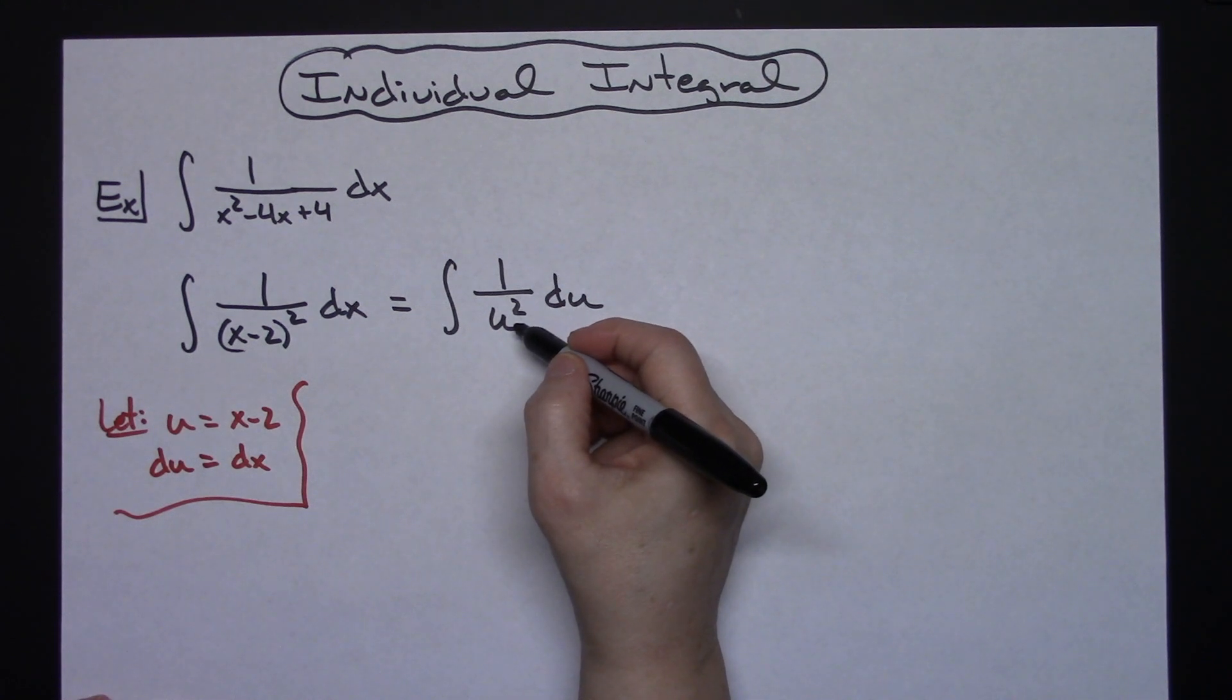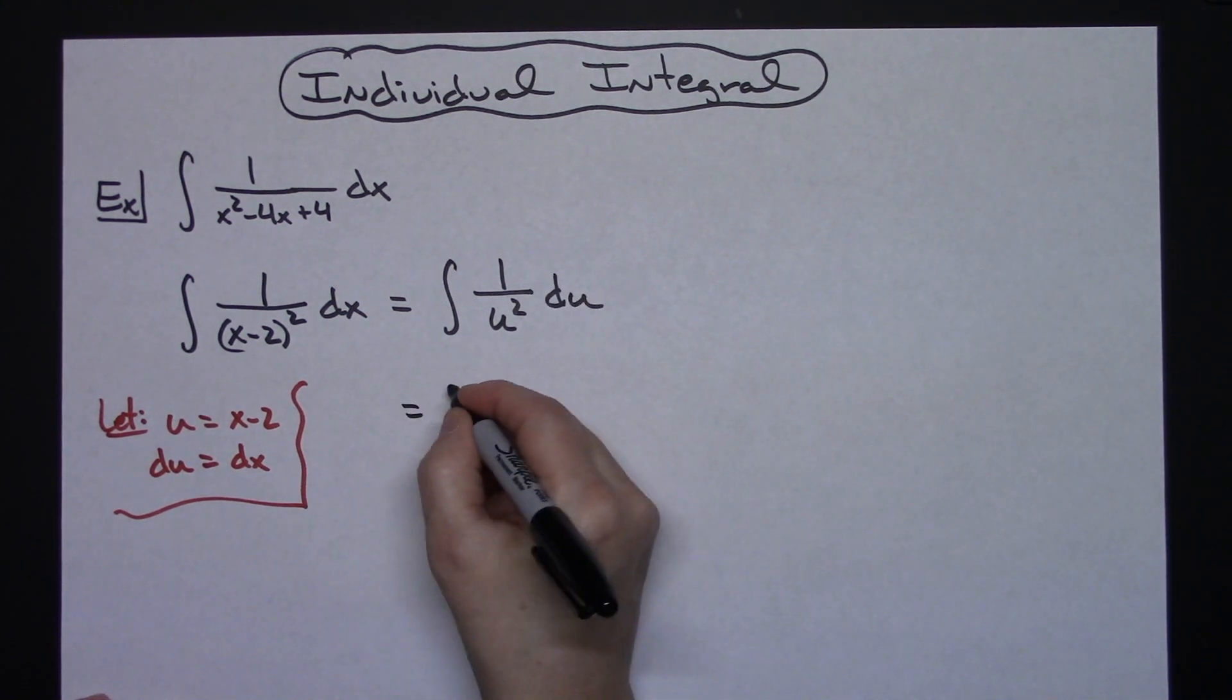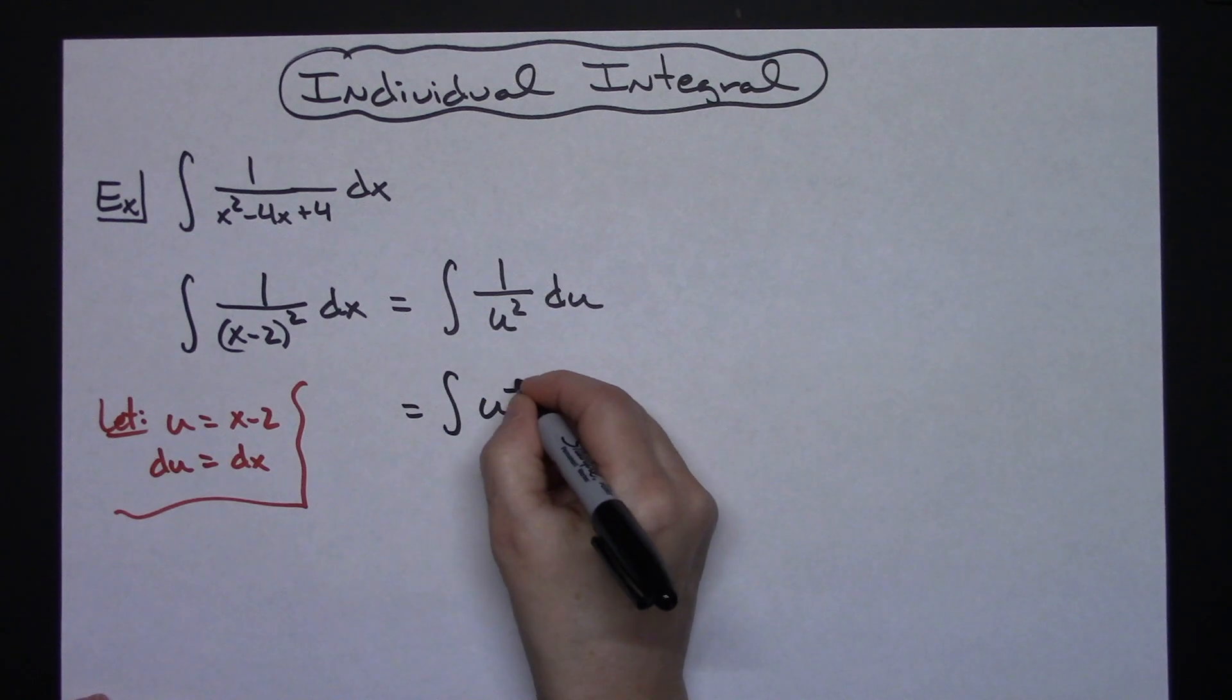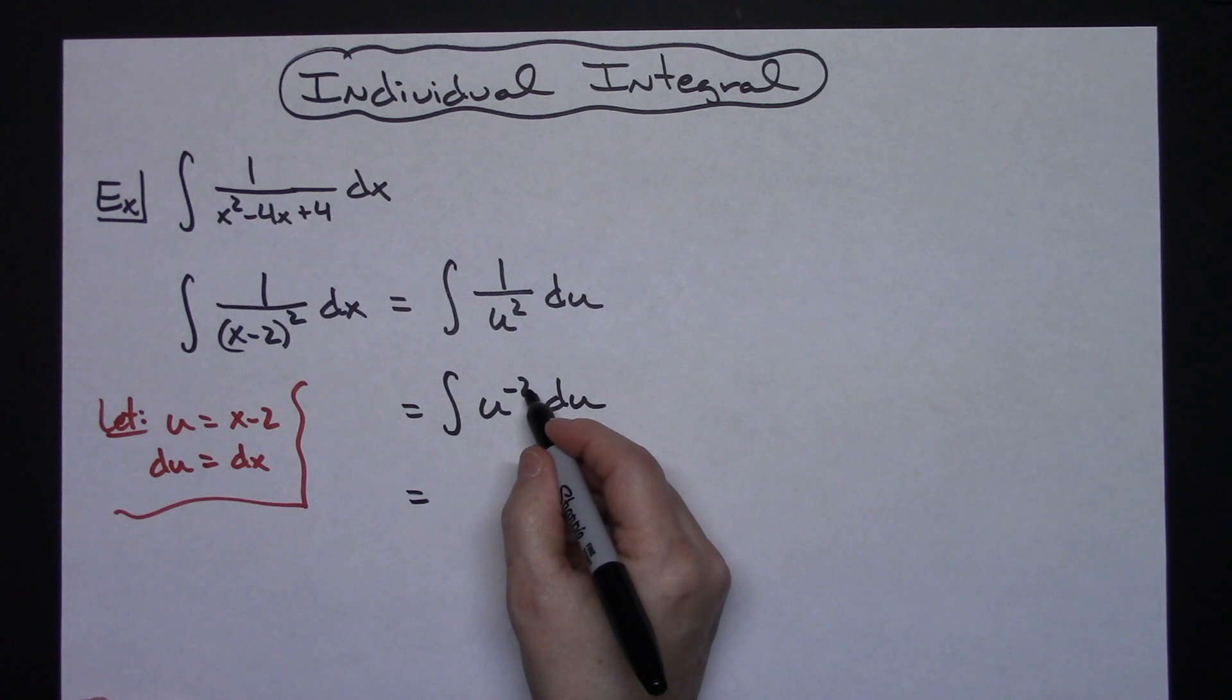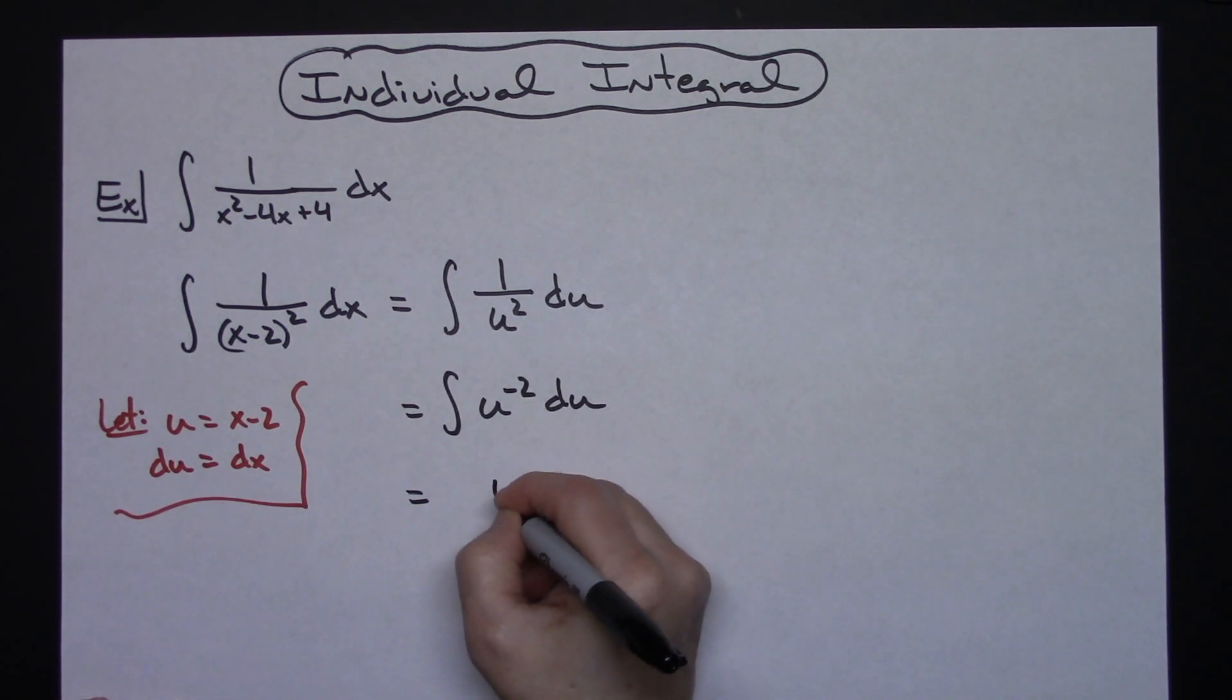I'll move that u squared up and make it negative, so I have the integral of u to the negative 2 du. Now I can integrate this: adding 1 to that exponent gives me u to the negative 1...